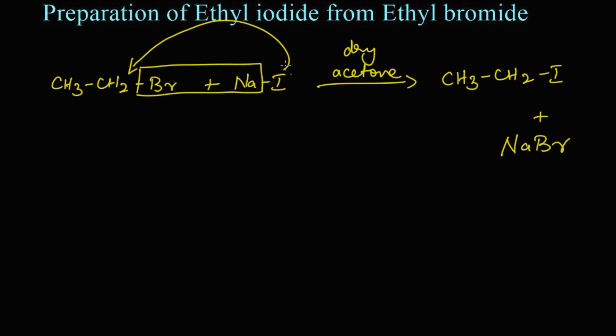Here, halogen exchange takes place — the bromine becomes attached to the sodium, and the iodine from sodium iodide becomes attached to the ethyl group, so we get ethyl iodide as the product. Now let's write the names for these structures: ethyl bromide reacts with sodium iodide.